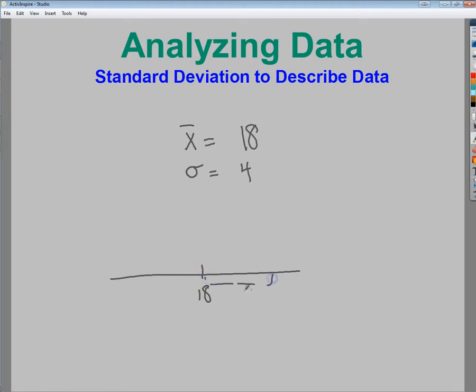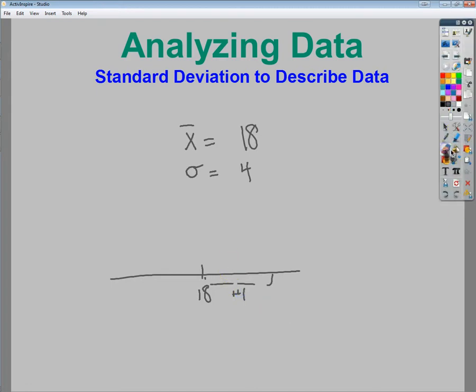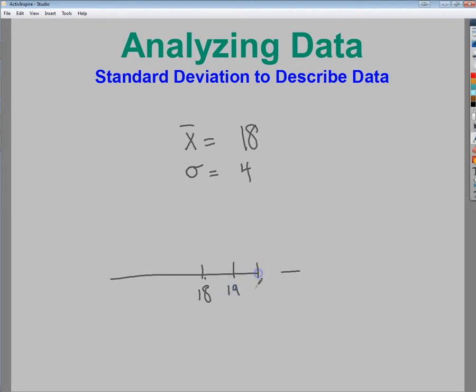So if I have my setup numbers: 19, 20, 21, 22. Here's my standard deviation away from where it happens to be. That would be one standard deviation above.